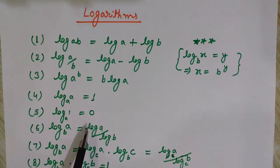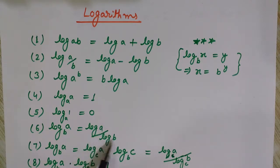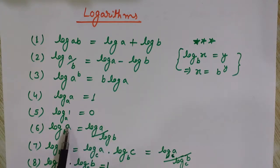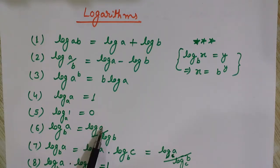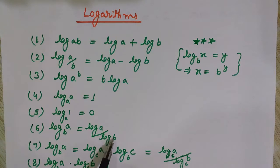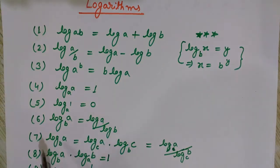You can also reverse this process: log of a divided by log of b can be written as log of a to the base b. Actually, if nothing is written in the base, then we assume the base is 10. So log of a means log of a to the base 10, and log of b means log of b to the base 10.